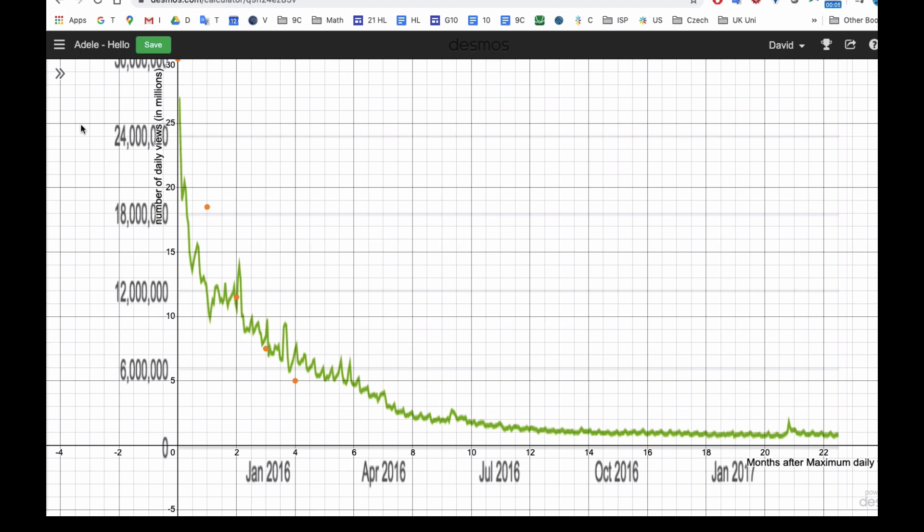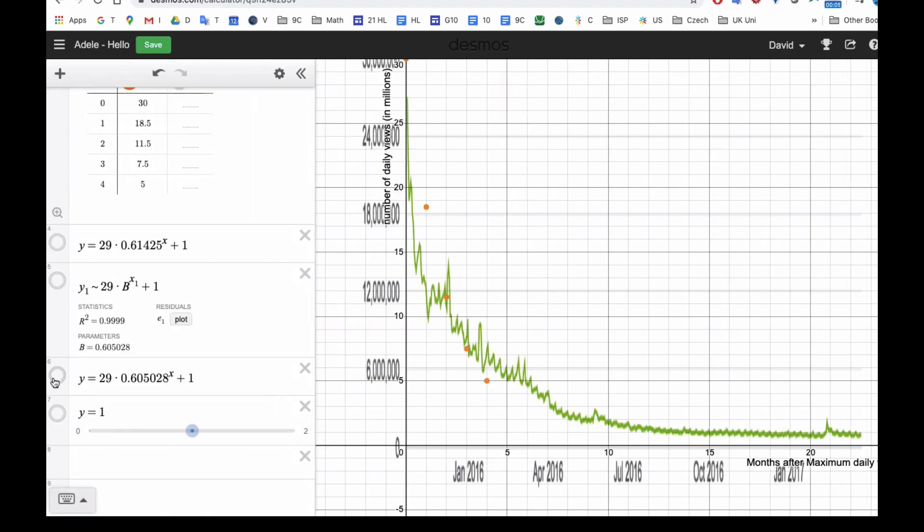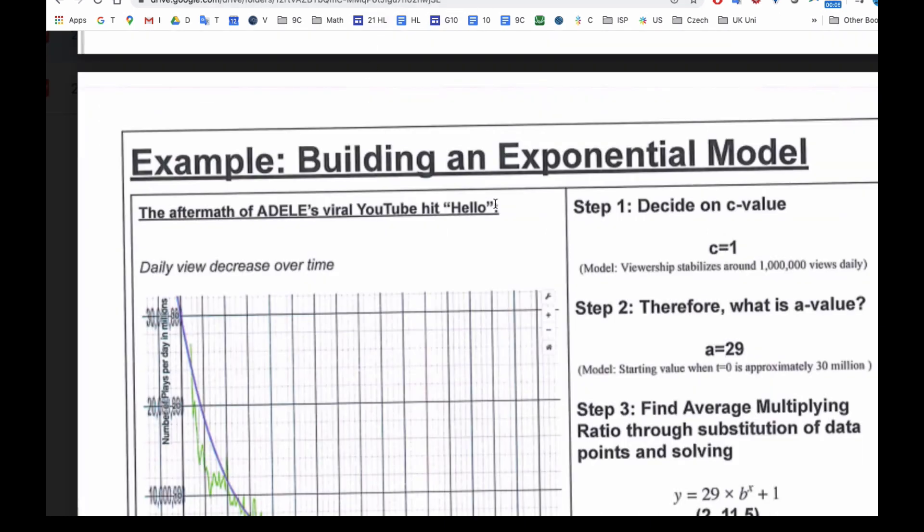And so in order to build our model, the first thing I'm going to do is I'm going to put on an asymptote, the y, this line here. And if you notice, the value of 1 is basically where it says every day there's a million viewers on Adele, is what this model here says. And so I'm going to work with that and make my c value equal to 1.